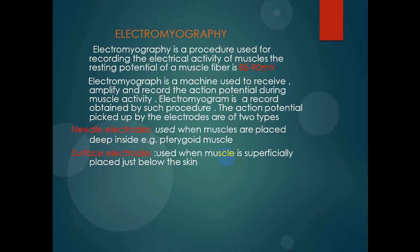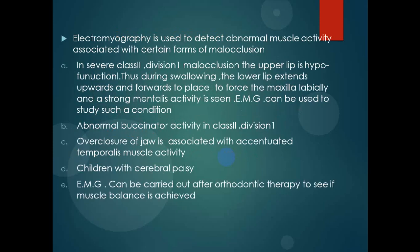During muscular activity the action potential is picked up by the electrodes, which can be of two types: needle electrodes for deep muscles and superficial electrodes used just below the skin for superficial muscles. Electromyography is used to detect abnormal muscle activity associated with certain forms of malocclusion. In severe Class 3 Division 1 malocclusion, the upper lip is hypofunctional; during swallowing the lower lip extends upward and forward to place force labially on the maxilla, and strong mentalis activity is seen. Electromyography can be used to study such conditions.